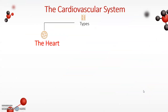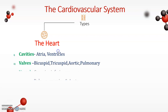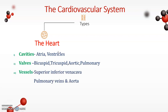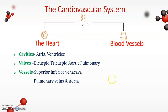The cardiovascular system is generally divided into two types. Number one is the heart, which is divided into cavities, walls, and vessels. The cavities include atria (also called atrium) and the ventricles. The walls include bicuspid, tricuspid, aortic, and pulmonary. The vessels include superior and inferior vena cava, veins, and capillaries.